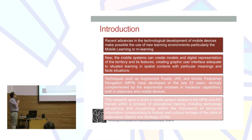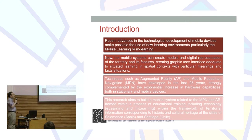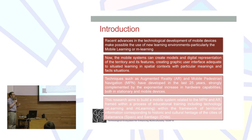Mobile systems can now create models and digital representations of territories and their features, creating graphic user interfaces adequate to situated learning in a spatial context with particular meanings. Techniques like Augmented Reality and Mobile Pedestrian Navigation have developed over the last 25 years, complemented in only five years by an exponential increase in hardware capabilities.